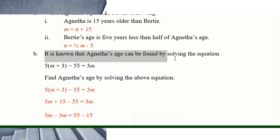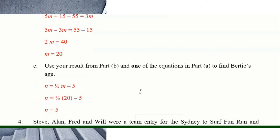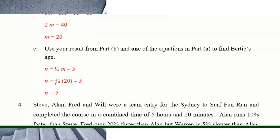Agneta's age can be found by solving the equation — you just solve for n to find Agneta since Agneta is m. Once you find m from part b, use one of the equations in part a to find Bertie's age by substituting in, and you'll get n equals five years old.